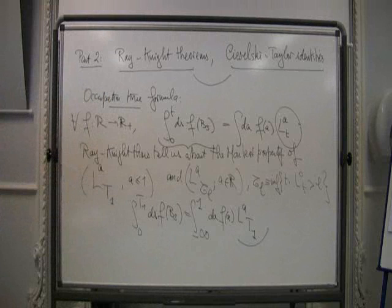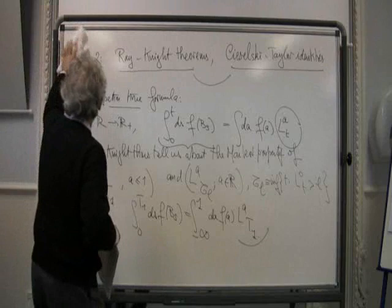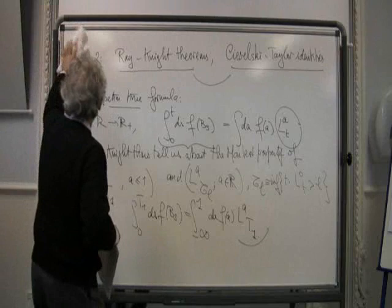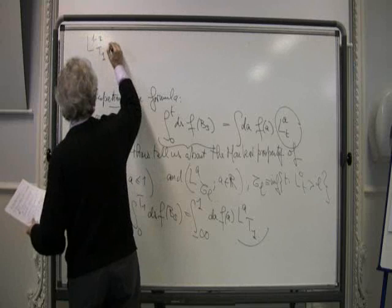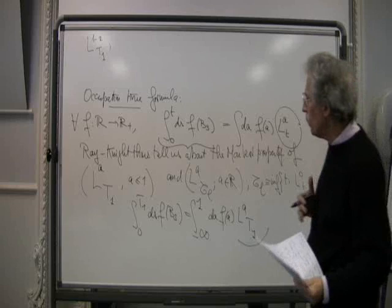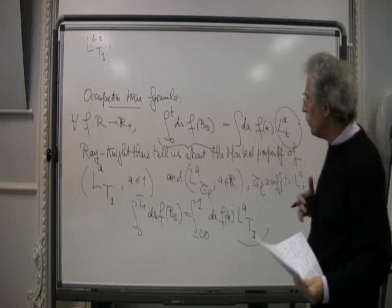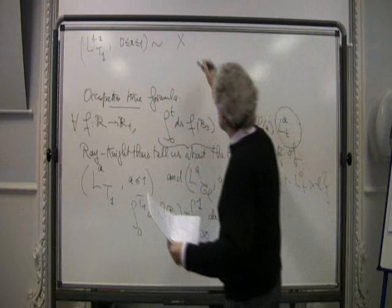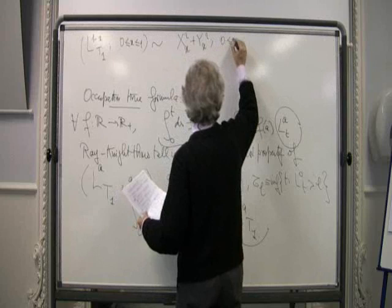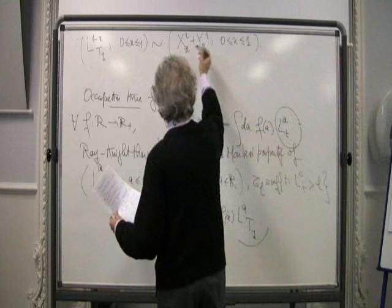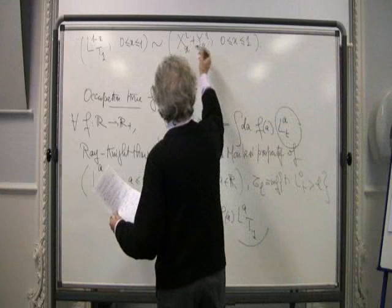What Ray and Knight separately in 1963 obtained is that L_A(T1) is a Markov process. And more than that, they can describe this Markov process in a very beautiful way. It is better to look at the local times from level 1 downwards. When x is between 0 and 1, this is distributed as an object we have seen before: x_s squared plus y_x squared, for x between 0 and 1. So we take the norm squared of two-dimensional Brownian motion — this is called the square of the two-dimensional Bessel process.